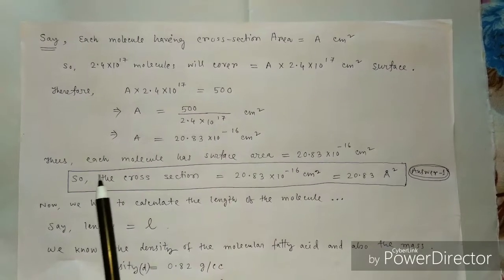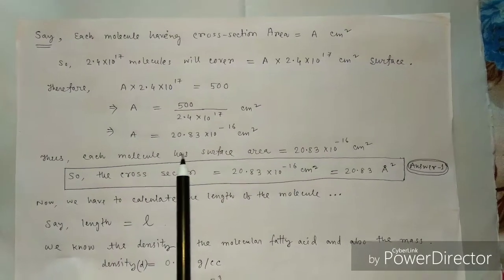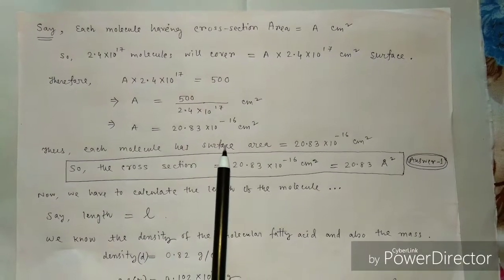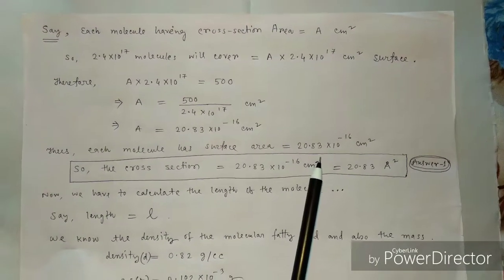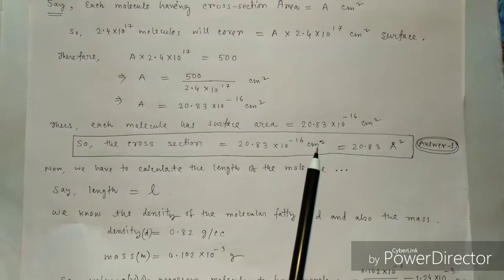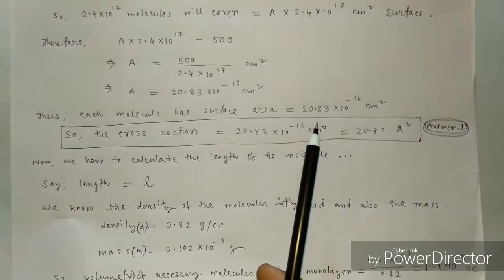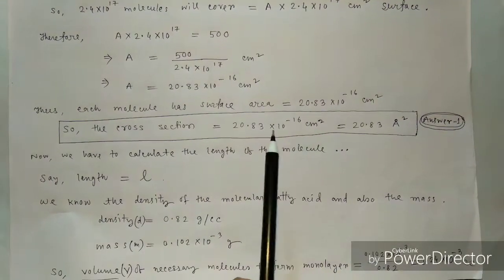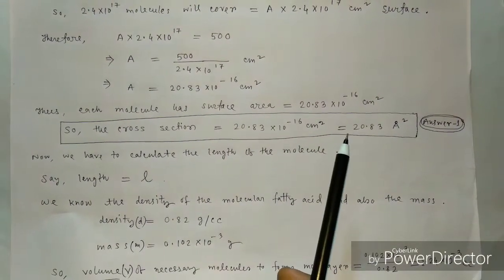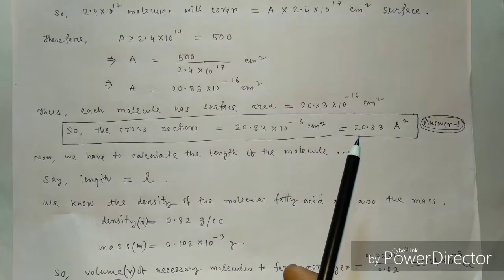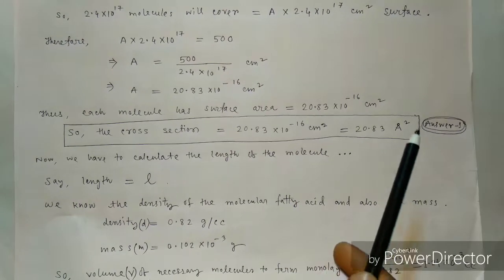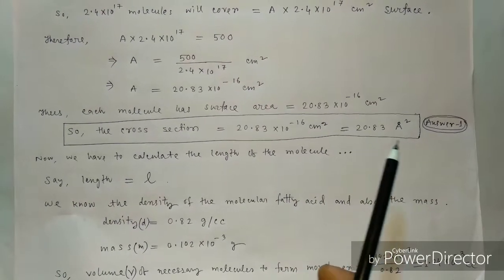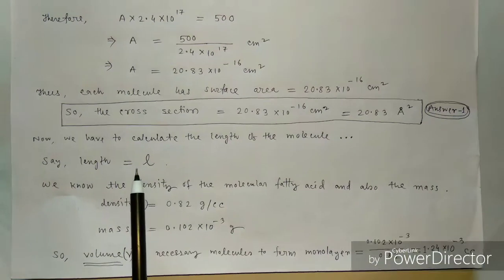From this we can calculate A, and we get the value A = 20.83 × 10⁻¹⁶ cm². So each molecule has a cross-section area of 20.83 × 10⁻¹⁶ cm², which converts to 20.83 Angstrom squared.